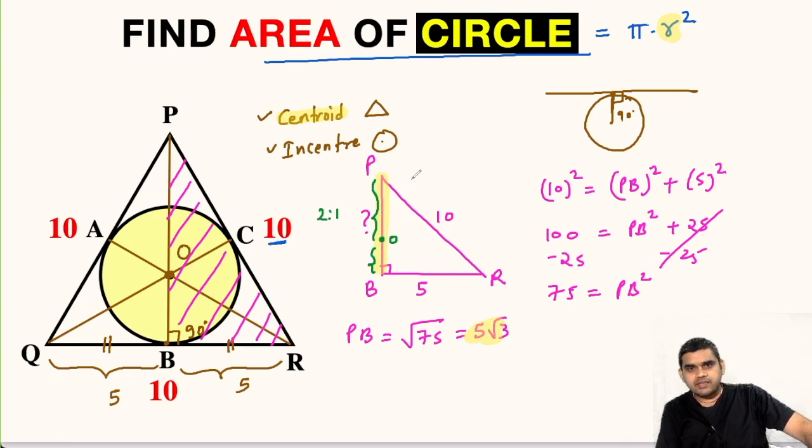So if this entire length PB is say for example X, then this length, then this length will be O to B will be X by 3 and P to O will be 2 times X by 3 and our aim was to find the radius of the circle which is nothing but distance between O and B.